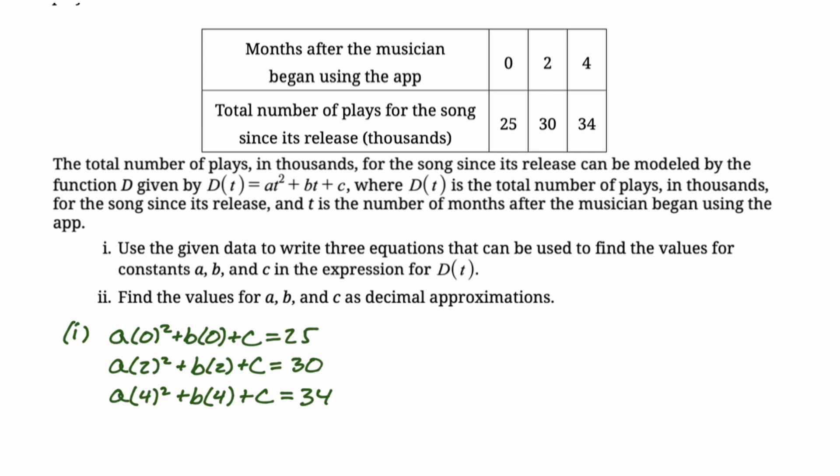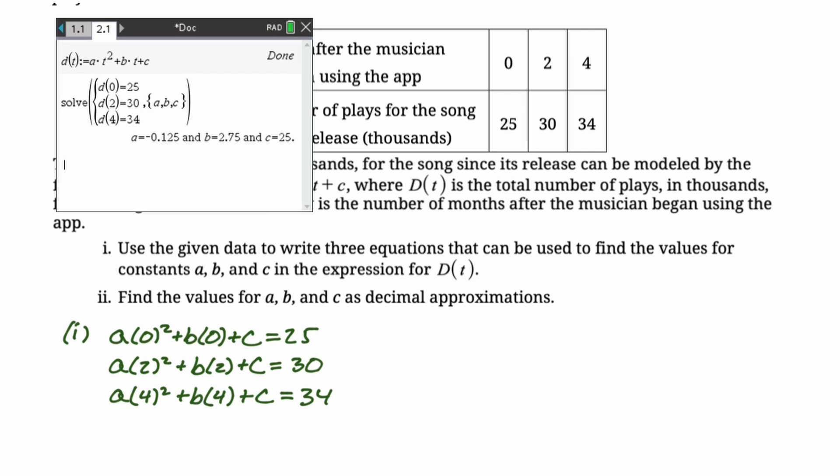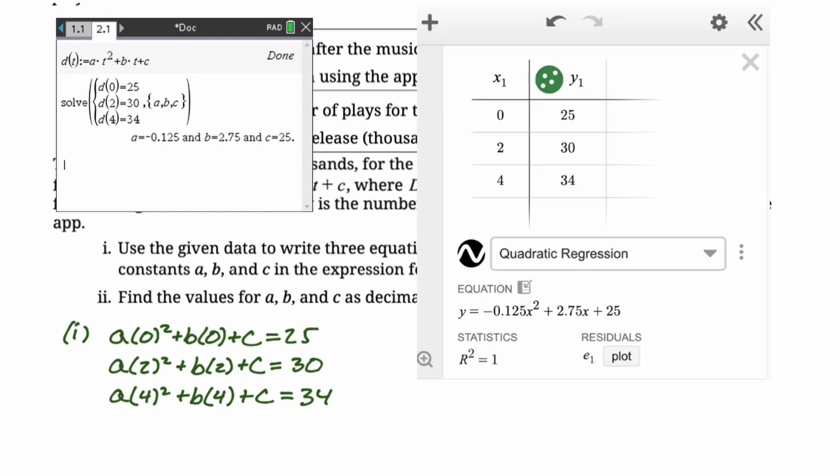Then we got to solve this. So my first thought is I just use my calculator to solve it. I got A is negative 0.125, B is 2.75, and C is 25. I also use Desmos. So I created a table of values. And then I used quadratic regression, and I got the same exact values. Reassuring, you don't have to do both, you do have to do one of them. And so we can just write down our values of A, B, and C.